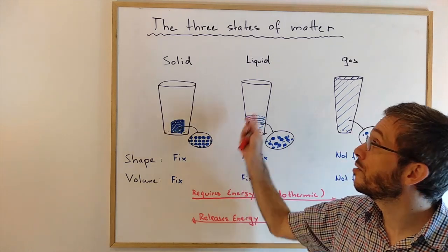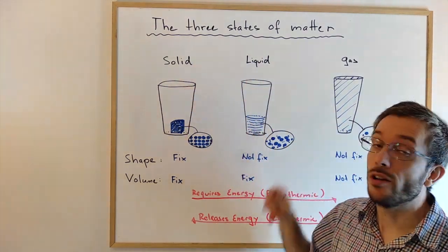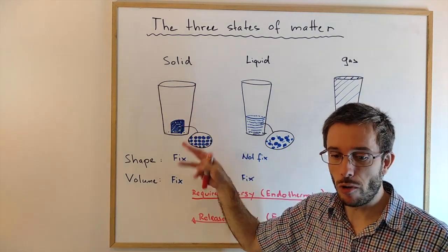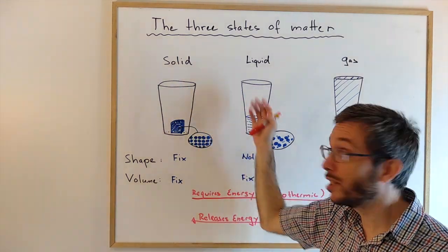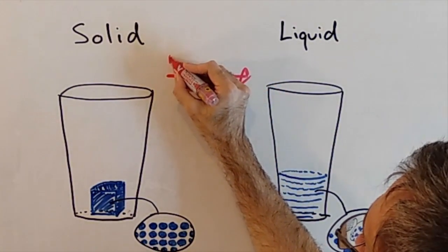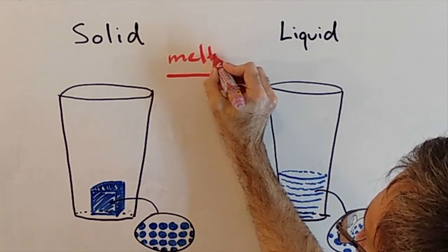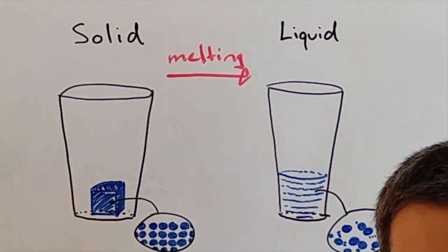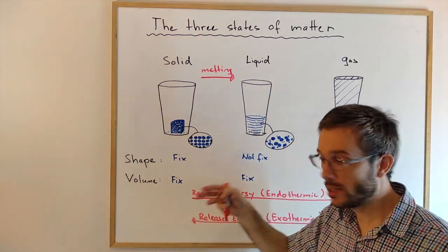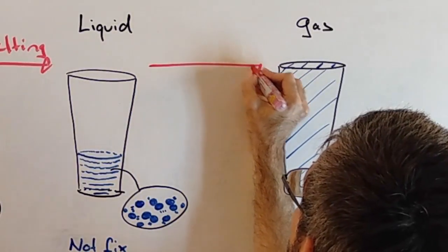When matter changes from one state to another, it undergoes a state change. Many of the names for those changes you already know. For example, if a solid becomes liquid, you call this melting. If then the liquid becomes a gas, that's either boiling or evaporation.